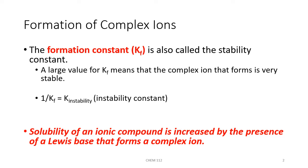You may also see K sub I on the formation chart, which is known as the instability constant — it is simply the inverse of the formation constant. The solubility of an ionic compound is increased by the presence of a Lewis base that can form a complex ion, so whenever you can form a complex ion with any of these slightly soluble salts, you are increasing their solubility and allowing more to dissolve in solution.